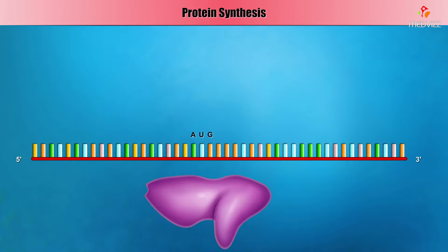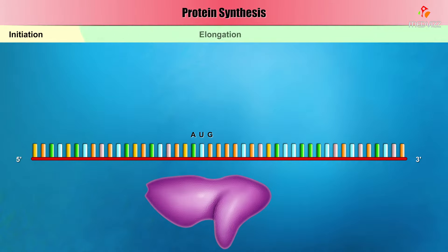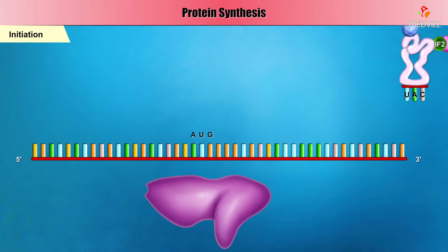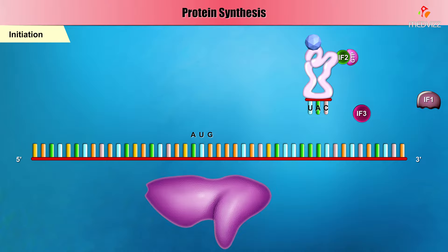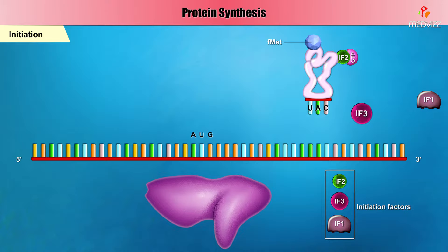Protein synthesis is a three-step process, including initiation, elongation, and termination. In bacteria such as E. coli, initiation requires three small proteins called initiation factors — IF1, IF2, and IF3 — as well as the first tRNA, the mRNA, and the small ribosomal subunit, also called the 30S subunit.